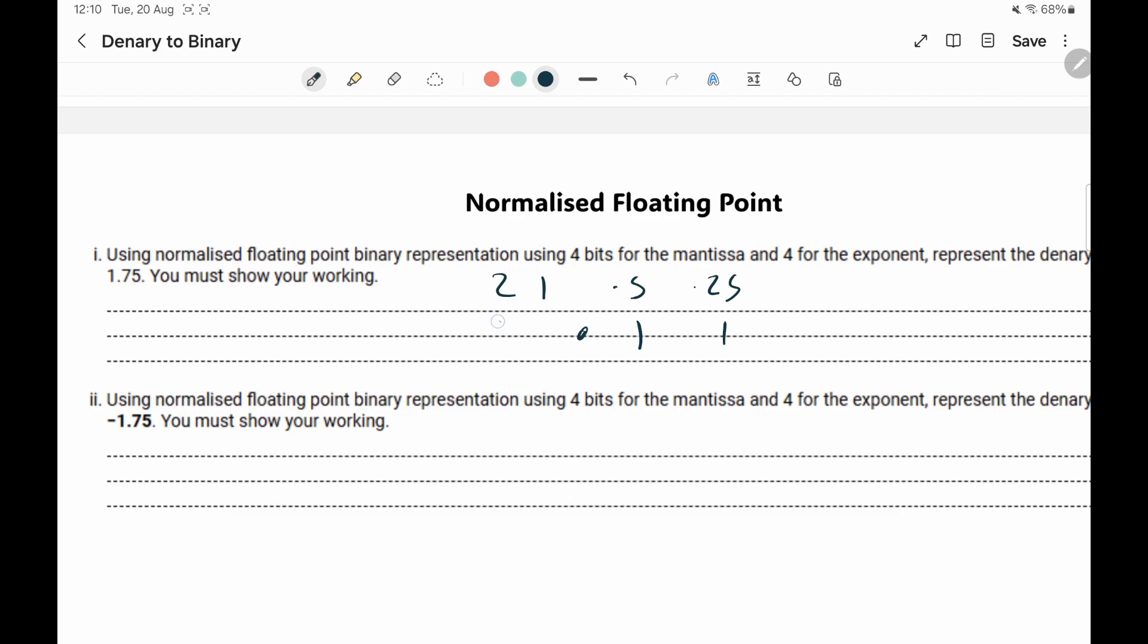so two ones there decimal point and then one two so it's going to be zero one. So 1.75 is actually the number so we can write that out so we've got zero one one one for the mantissa there's four bits the exponent moving from here to there so the exponent is going to be zero zero zero one. So your final answer zero one one one zero zero zero one done.